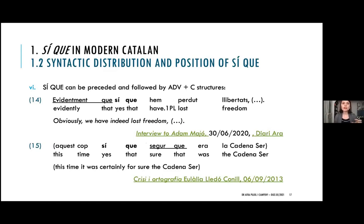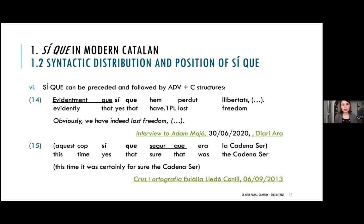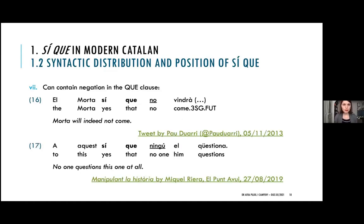SICA can be preceded and followed by adverb-plus-complementizer clusters or structures. I'm using Cocher 2017's terminology to refer to clusters formed by something that looks like an adverb, always adjacent to C, heading a clause that follows. They tend to have, in modern Catalan, an epistemic or evidential value, and they can precede or follow SICA depending on whether they are epistemic or evidential. As we can see, evidentment que SICA en perder llibertats is absolutely fine, and eget cop si que se va que era la cadena ser is fine too.